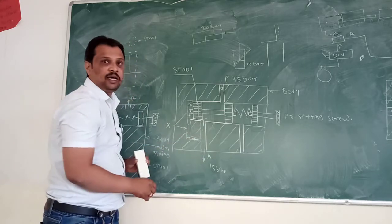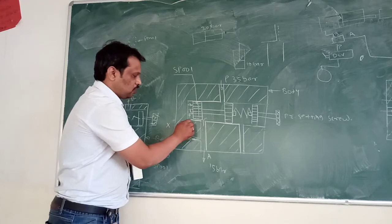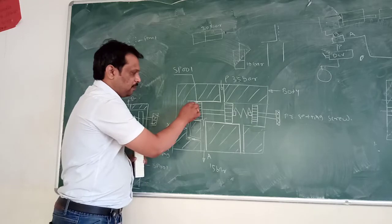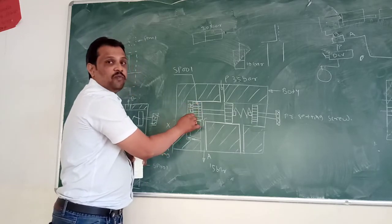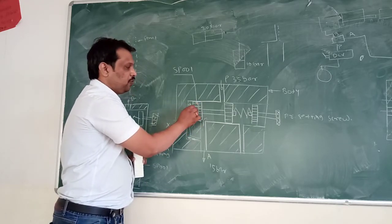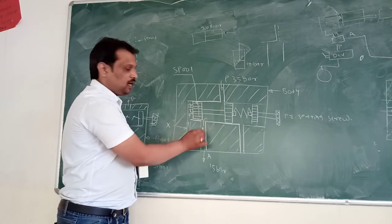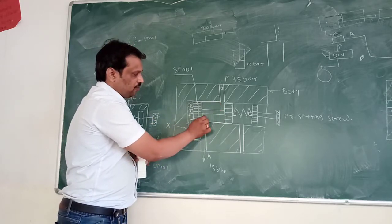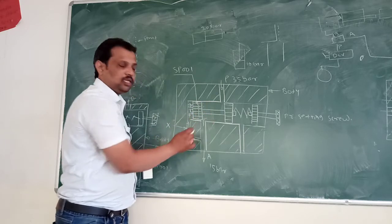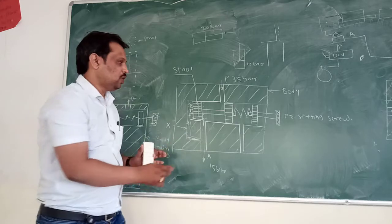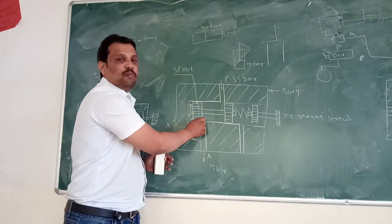Oil will flow from this portion going towards A portion. At the same time, this oil will also go into passage X. When this oil goes into passage X, this excess oil will exert pressure on this side of the valve and this spool will move towards the right side. When the spool moves towards the right side, your this cavity will get blocked.